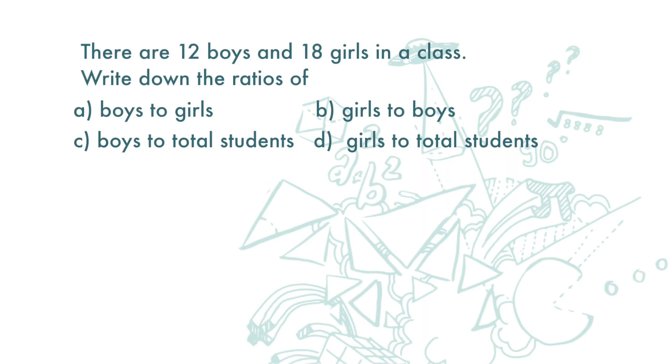There are 12 boys and 18 girls in a class. Write down the ratio of: a) boys to girls, b) girls to boys, c) boys to total students, d) girls to total students.